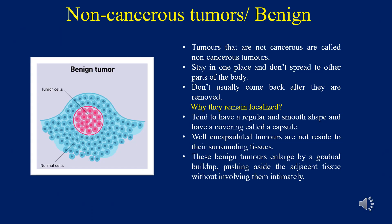The first type is non-cancerous tumors, also known as benign. Tumors that are not cancerous stay in one place and don't spread to other parts of the body. They don't usually come back after they are removed and may be removed easily within the tissue. However, they can cause pain or other problems if they press against nerves or blood vessels, or if they trigger the overproduction of hormones as in the endocrine system. All benign tumors tend to remain localized at the site of origin.